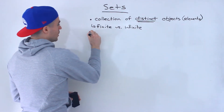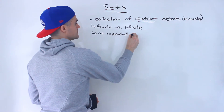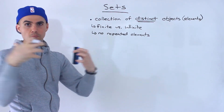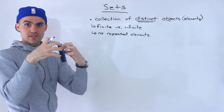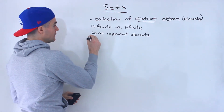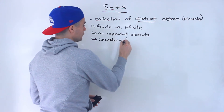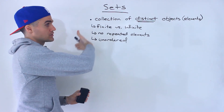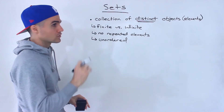When we say distinct, what that means is that in a set there are no repeated elements. In future videos we'll be taking multiple sets and merging them — if two sets share the same element, in the merged set we would only write that element once. There's also no specific order in sets; they are unordered. Elements don't necessarily have to be listed from smallest to largest or largest to smallest.